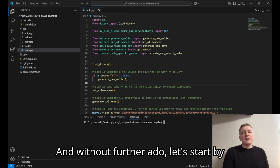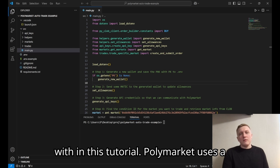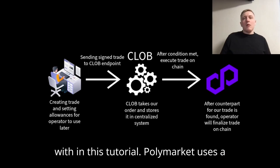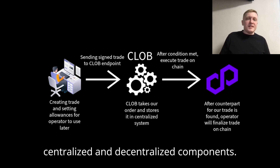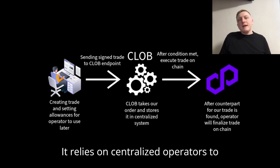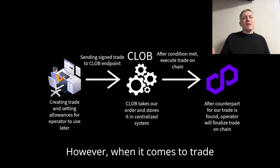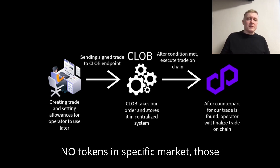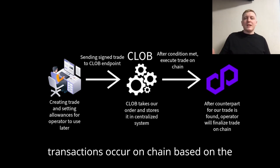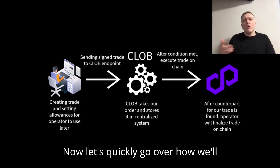Let's start by getting familiar with Polymarket's infrastructure. Polymarket uses a system called CLOB — a hybrid of centralized and decentralized components. It relies on centralized operators to handle trade publication and management. However, when it comes to trade execution, like buying or selling yes or no tokens in a specific market, those transactions occur on-chain based on the instructions you provide to operators.